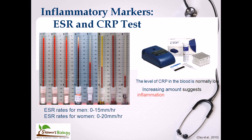ESR stands for erythrocyte sedimentation rate — erythrocyte means red blood cell. As you can see in this picture, tubes filled with blood are placed so that the blood is allowed to settle. The red blood cells settle down and leave a clear solution called plasma, which is the matrix of our blood containing no red blood cells. The length of the plasma column is the typical measure for ESR.